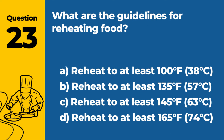Question 23. What are the guidelines for reheating food? a. Reheat to at least 100°F, 38°C. b. Reheat to at least 135°F, 57°C. c. Reheat to at least 145°F, 63°C. d. Reheat to at least 165°F, 74°C. Answer d. Reheat to at least 165°F, 74°C. Food should be reheated to an internal temperature of at least 165°F, 74°C, to kill any potentially harmful bacteria.